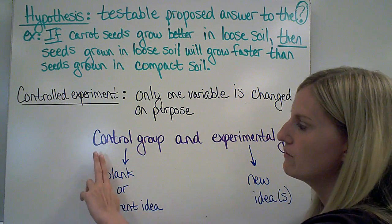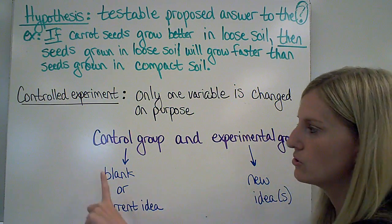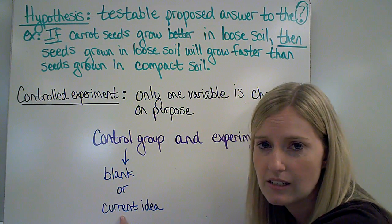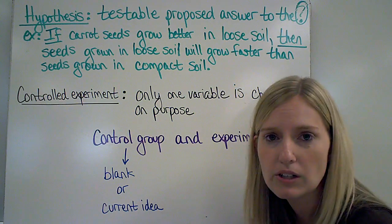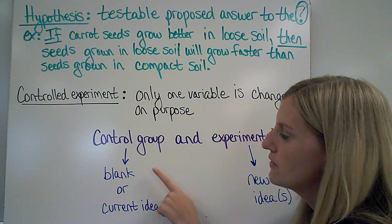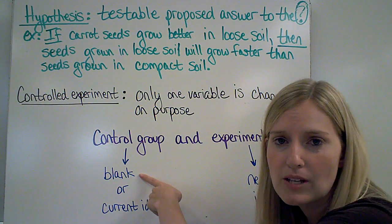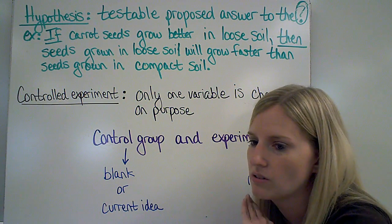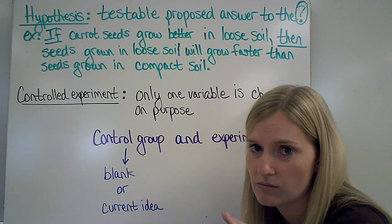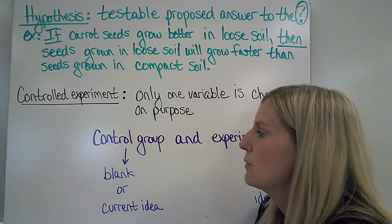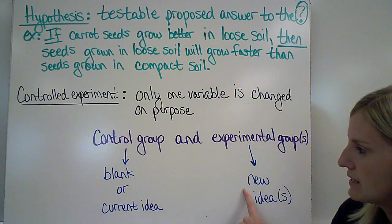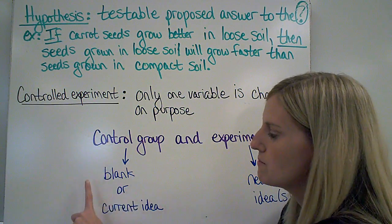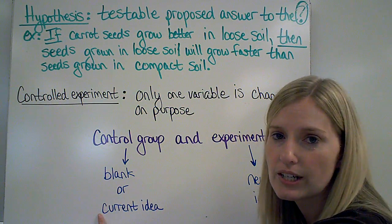In a controlled experiment, I have two groups. The control group in this case would be my current idea — to make sure that the soil is nice and compact around the seed. The control could also be a blank. So if I'm testing different kinds of water, my control group might just be regular water, while my experimental groups — the new ideas — could be salt water or sugar water. So the control can be a blank or it can be what you currently use or your current idea.